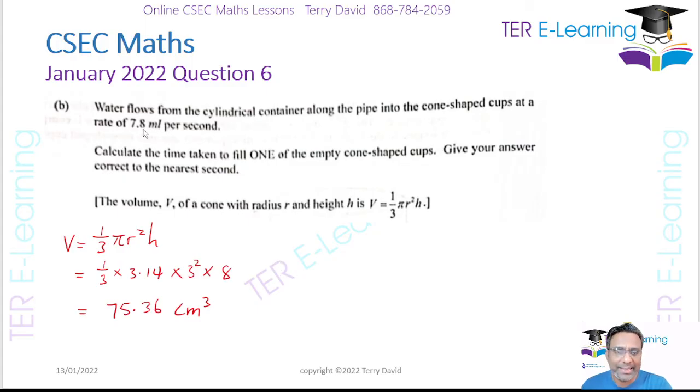They said that it's flowing at a rate of 7.8 milliliters per second. Now one ml of water has a volume of one cm³. You have a volume of 75.36 cm³.